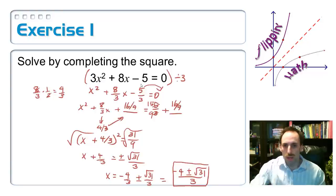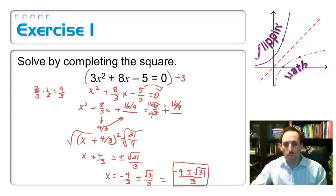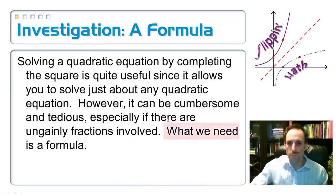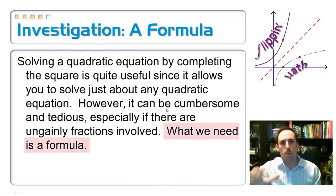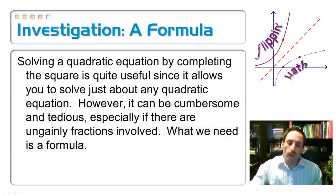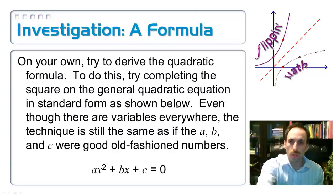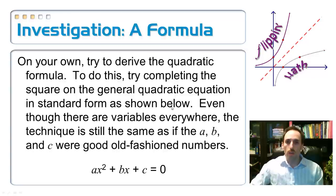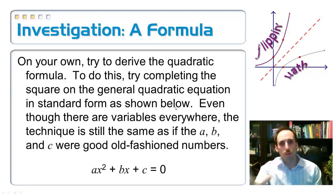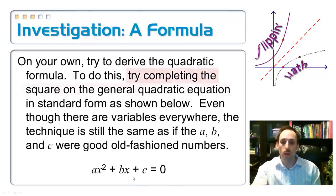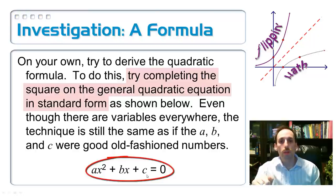Kind of tedious with all those fractions, right? Well, maybe if we could come up with some sort of formula, we wouldn't have to deal with all those fractions — we'd just put the numbers in the formula and be done with it. And there is such a thing called the quadratic formula. Rather than me just give it to you, why don't I try to make you come up with it yourself? What you have to do is complete the square on ax squared plus bx plus c equals zero.